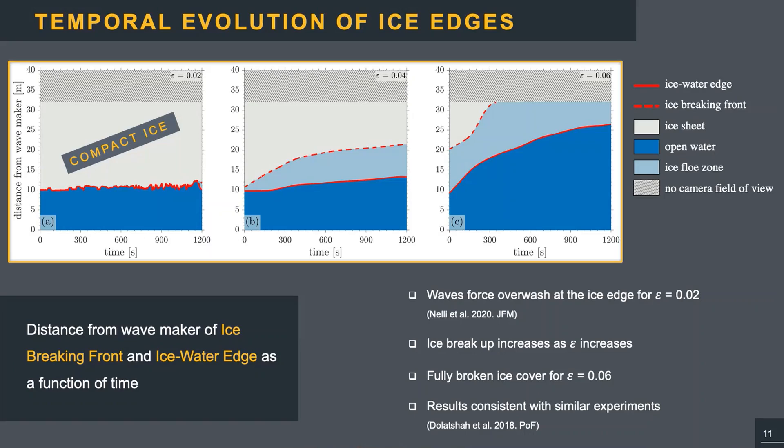Waves with a low steepness propagate through the continuous ice cover without generating any fracture. However, the overwash at the ice edge accelerated the ice edge melt and crumbling for about a meter. That corresponds to the initial difference between ice water edge and breaking front for the intermediate steepness. At this steepness, the ice starts to break up, and after six minutes, the breaking front and the ice edge begin to advance at about the same speed, keeping the area of broken floes constant.